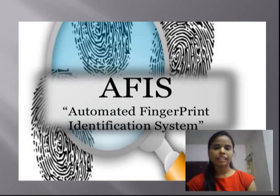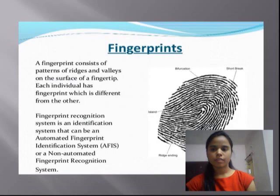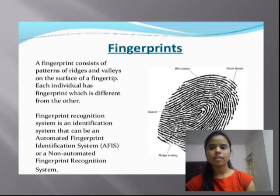The Automated Fingerprint Identification System is fully based upon the fingerprint. So first we have to talk about fingerprints. Fingerprints consist of patterns of ridges and valleys on the surface of a fingertip. Each individual has a fingerprint which is different from the other. The Fingerprint Recognition System is an identification system that can be an Automated Fingerprint Identification System or a Non-Automated Fingerprint Recognition System.